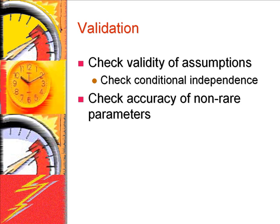First, you can check the assumptions of the model. For example, in a fault tree, a series of events are often linked to each other. One could check that this is a reasonable link by examining the conditional independence among these serially linked events.